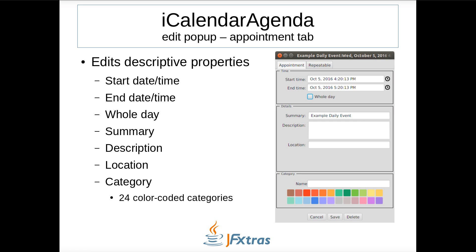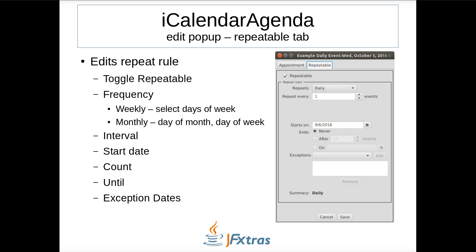The edit pop-up has two tabs. The first is the appointment tab, which contains start date time, end date time, and whole day properties. The start and end properties can be set by typing a new date time or graphically via the date time picker by clicking the clock icon. The whole day checkbox toggles between date-based and date-time-based events. The summary, description, and location properties all accept text. The category can be named and assigned a color. The repeatable tab toggles between an individual event and a repeatable one. Recurrence rule elements that can be set include frequency, interval, start date, count, until, and exception dates. When the frequency is weekly, checkboxes for each day of the week appear; when monthly, checkboxes for day of month or day of week appear.